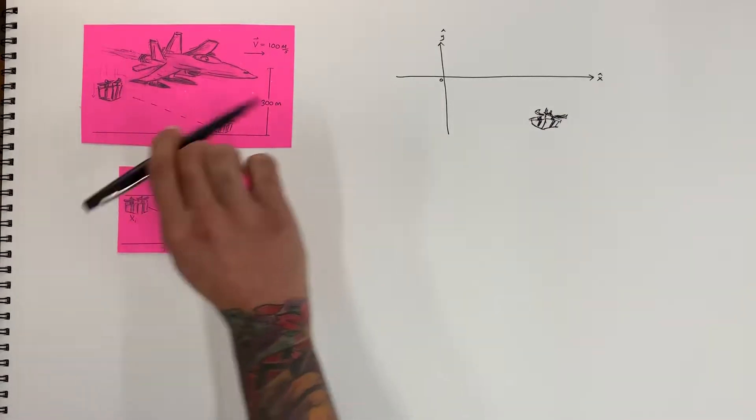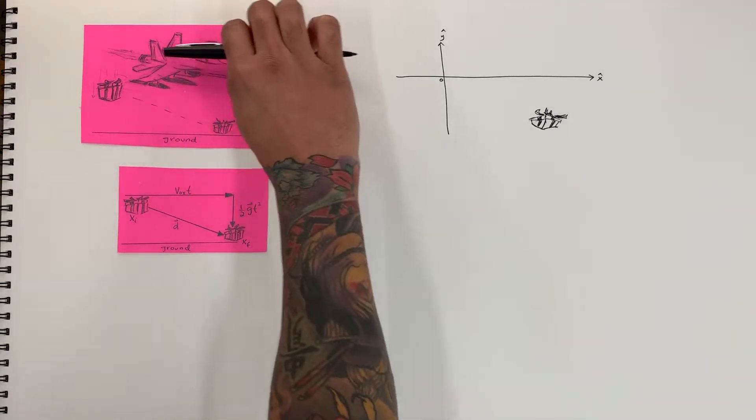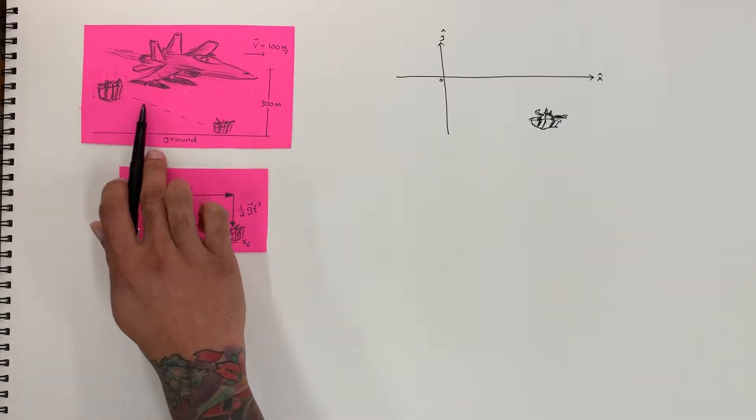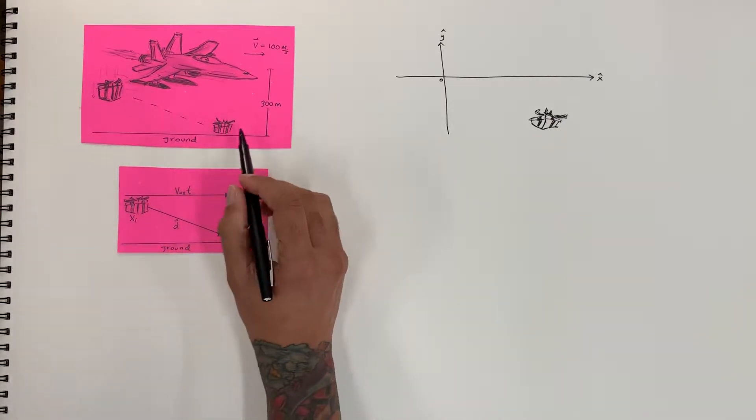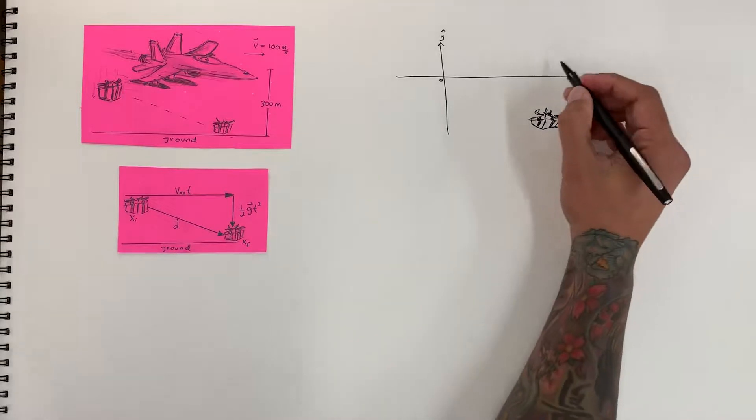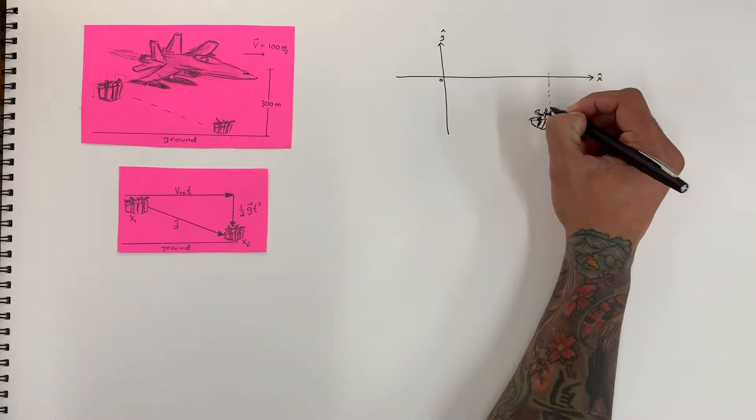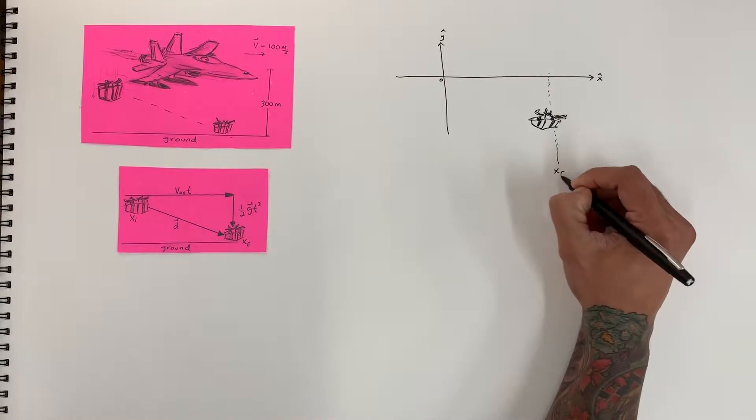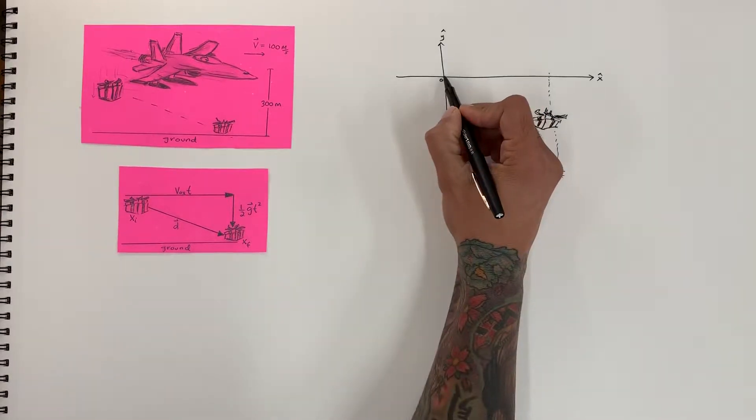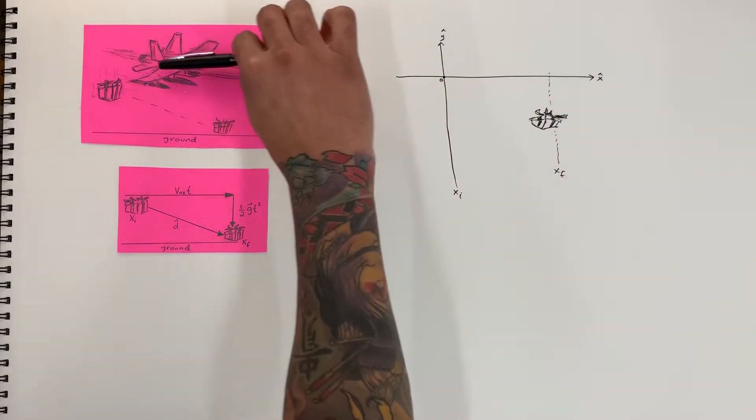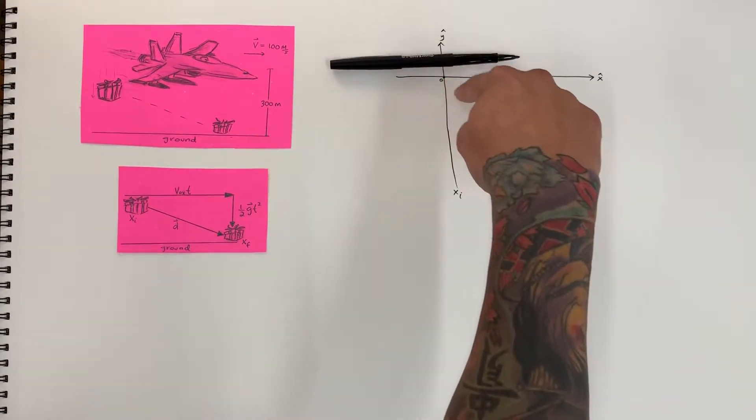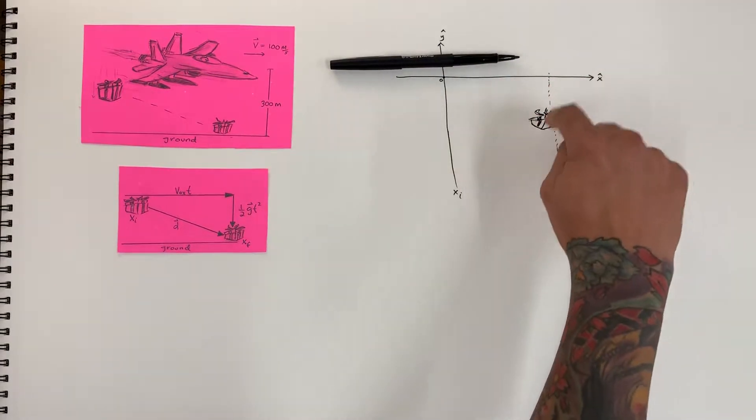So this plane is flying with a velocity of 100 miles per hour like that, and it drops off a package. And the package is going to be falling, falling, and we want to know where the x-final of that package is going to be. And so where along here? This is going to be our x-final position, and our x-initial position, we can say, was dropped off at the origin. So the plane flies at a velocity of 100 miles an hour and drops it off exactly at zero, and it flies to some final position in x.